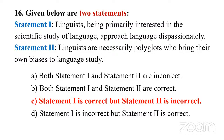If you know that statement one is correct, you can eliminate options A and D. Given the contradiction between the statements, you can also eliminate option B, leaving only C: statement one is correct but statement two is incorrect.